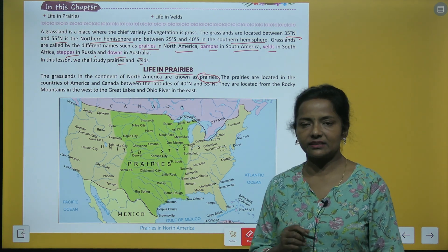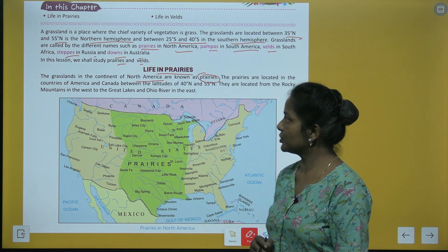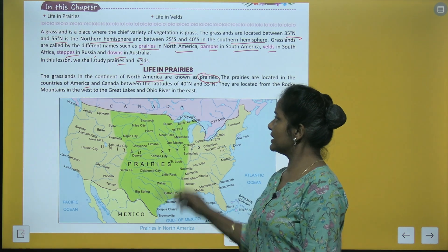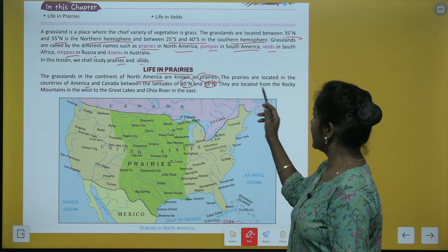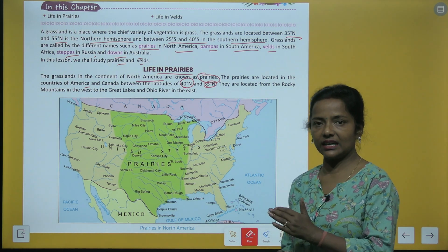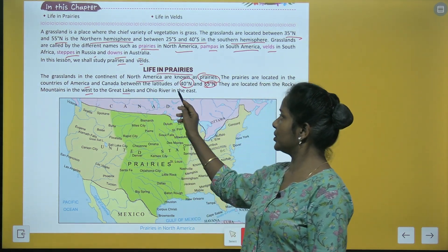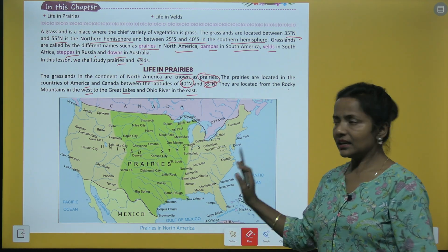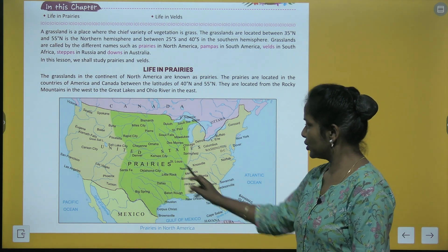The grasslands in the continent of North America are known as prairies. North America mein jo grasslands hain unko kaha jata hai prairies. The prairies are located in the countries of America and Canada between the latitudes of 40 degree north and 55 degree north. They are located from the Rocky Mountains in the west to the Great Lakes and Ohio River in the east.